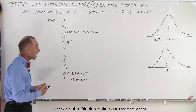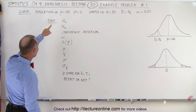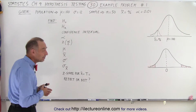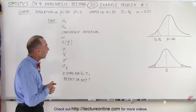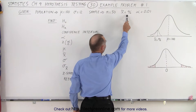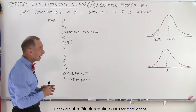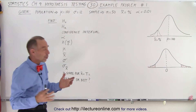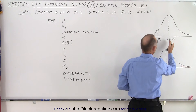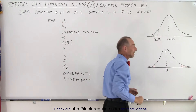So let's assume that we have the following information. For the population, we're told that we have a mean of 100 and the standard deviation equals 12. We take a sample with a sample size of 50. The mean of the sample is 96 and the level of significance is 0.01. Here I've drawn schematically what we're talking about — the large population with a mean of 100 and a smaller sample with a mean of 96.